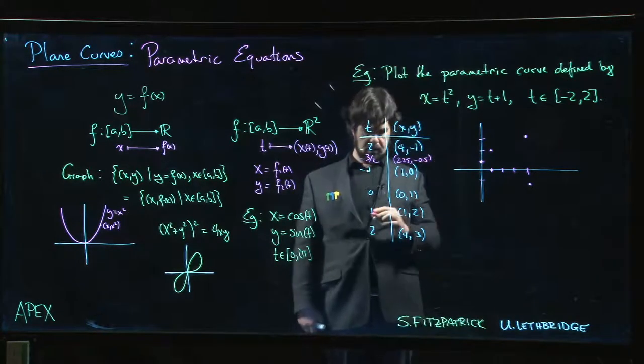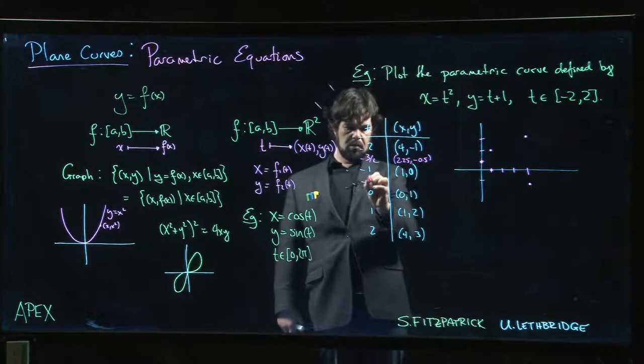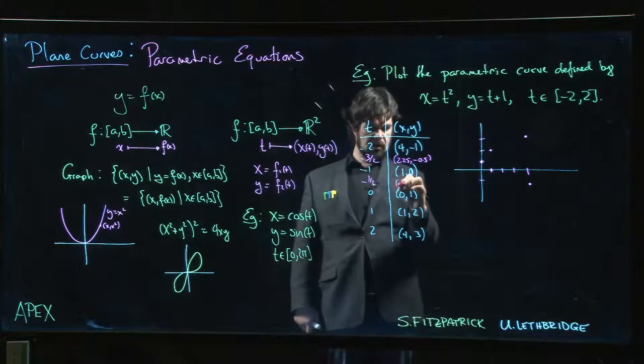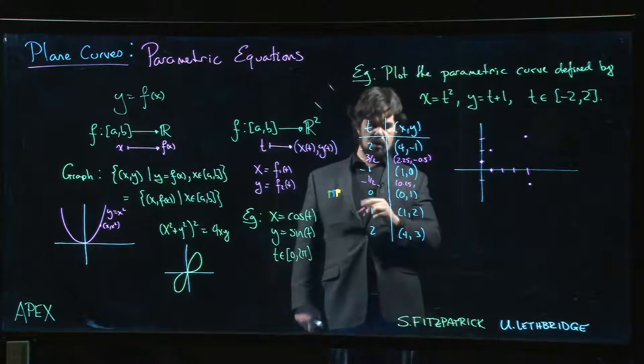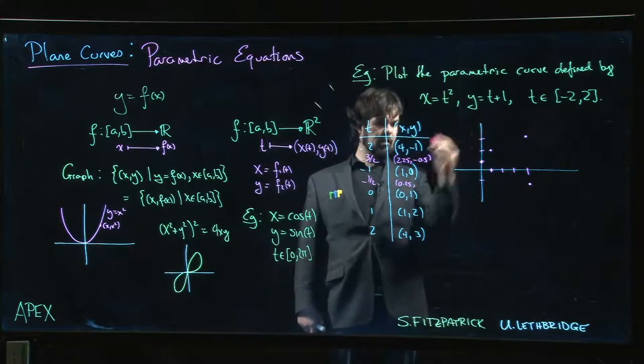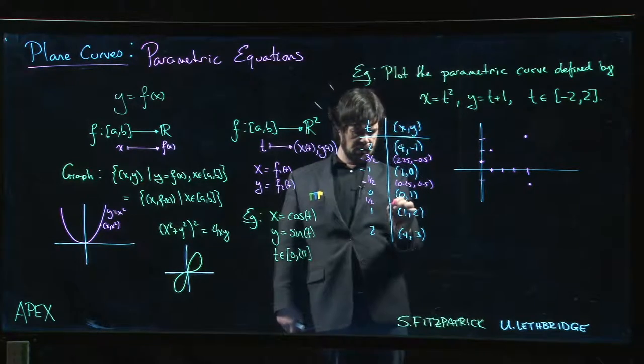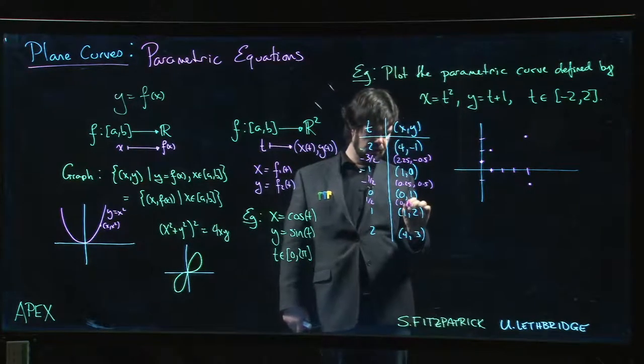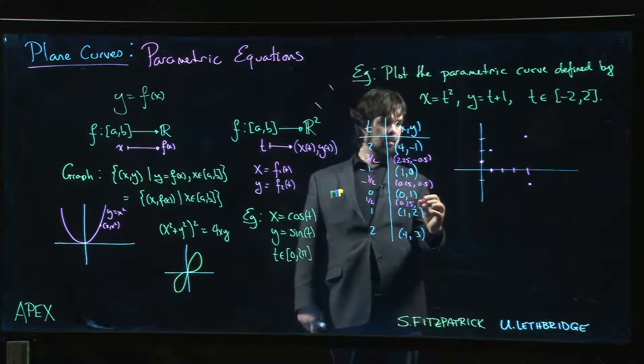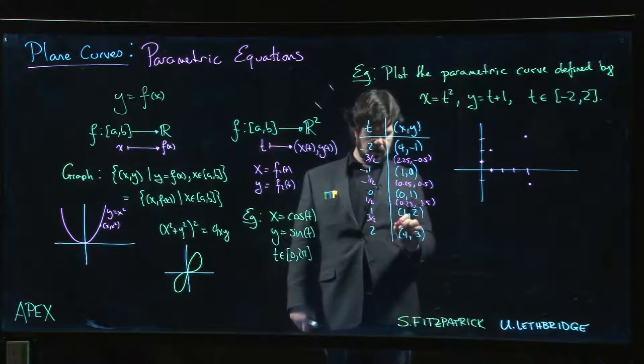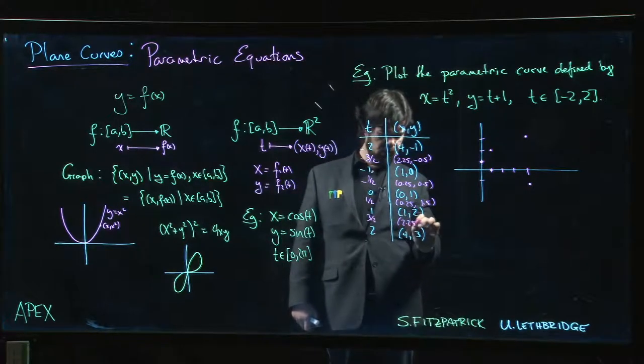We could try -1/2: 0.5 squared we get 0.25, and -0.5 + 1 we get 0.5. We try +1/2, we get 0.25. We get 1.5. We try 3/2, so 1.5 we get 2.25 and 2.5.